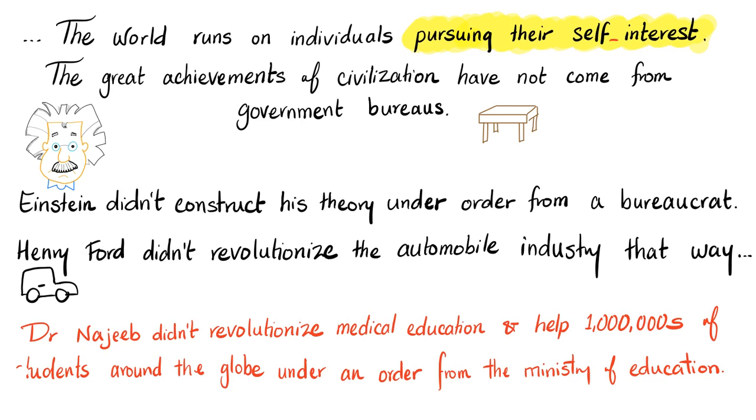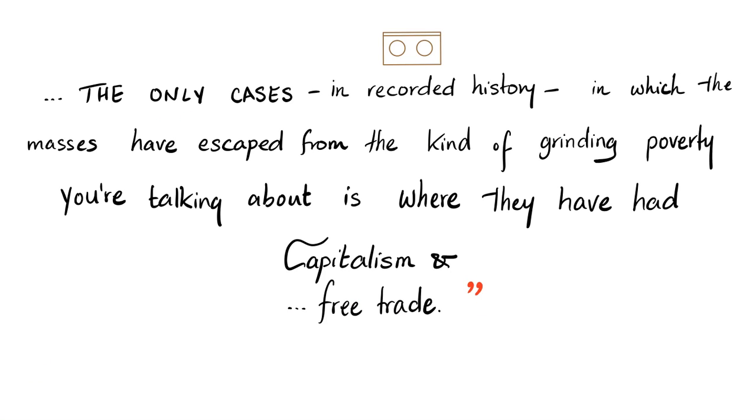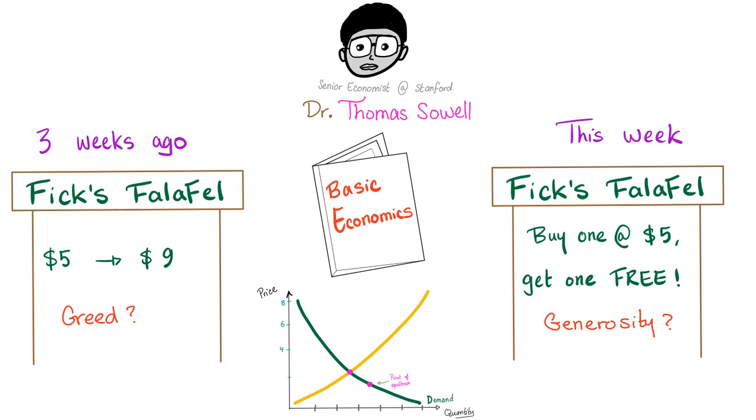And here are my two cents. Dr. Najeeb didn't revolutionize medical education and help millions of students around the globe under an order from the Ministry of Education. The only cases in recorded history in which the masses have escaped from the kind of grinding poverty that you're talking about is where they have had capitalism and largely free trade. A similar theory is presented in Dr. Thomas Sowell's book Basic Economics. Imagine that three weeks ago you went to fix falafel and you realize that the falafel sandwich has increased from $5 a sandwich into $9. Oh, that's because they are greedy. Imagine that this week you went to the same store and now they have buy one get one free at $5. What happened? What's your theory now? Did they become generous over time? Did they suddenly convert and atone and change from devils to angels? Or maybe it is something more fundamental than that. Supply and demand. This is basic economics.